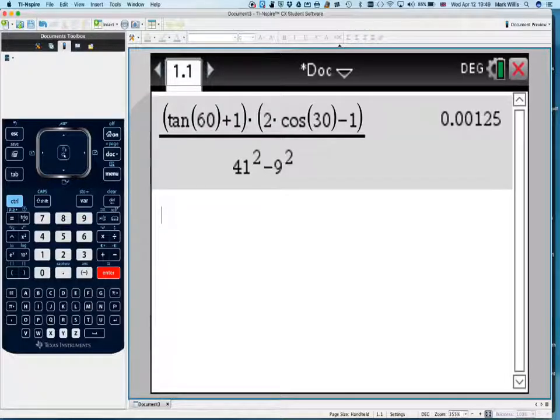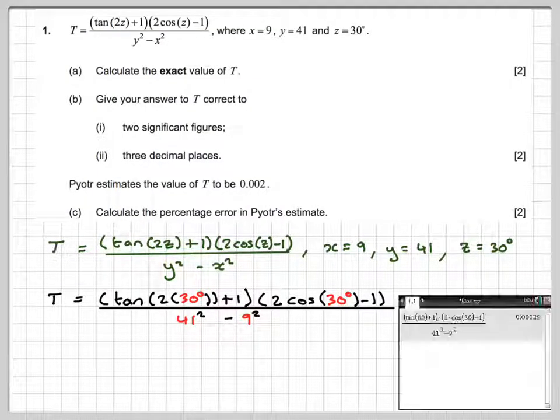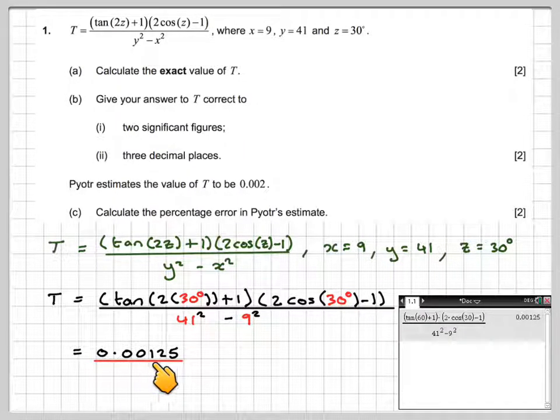Press enter, and you'll get an answer of 0.00125. It's a little bit tricky because quite a lot of brackets need to be put in before you can actually get the correct answer. There's a screenshot, so write down the exact answer, 0.00125.